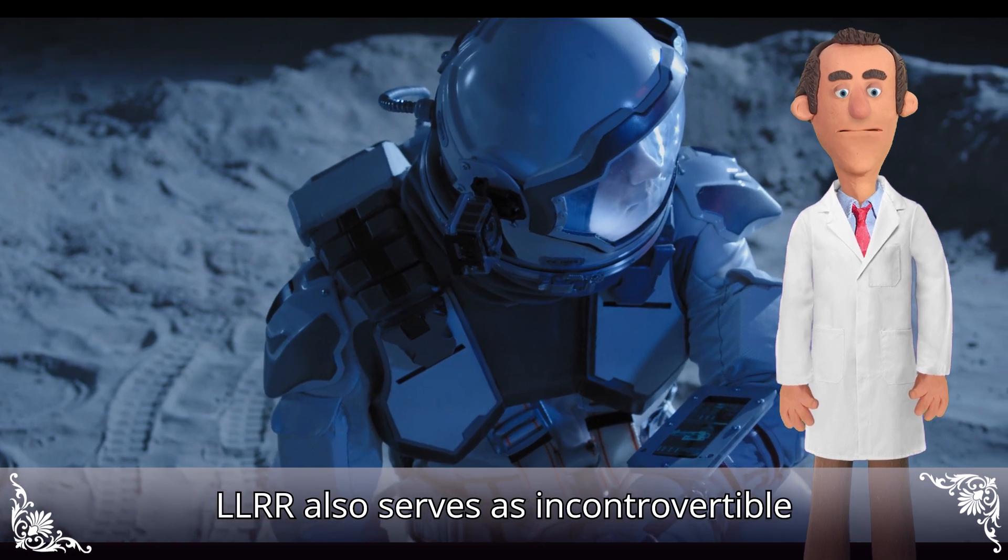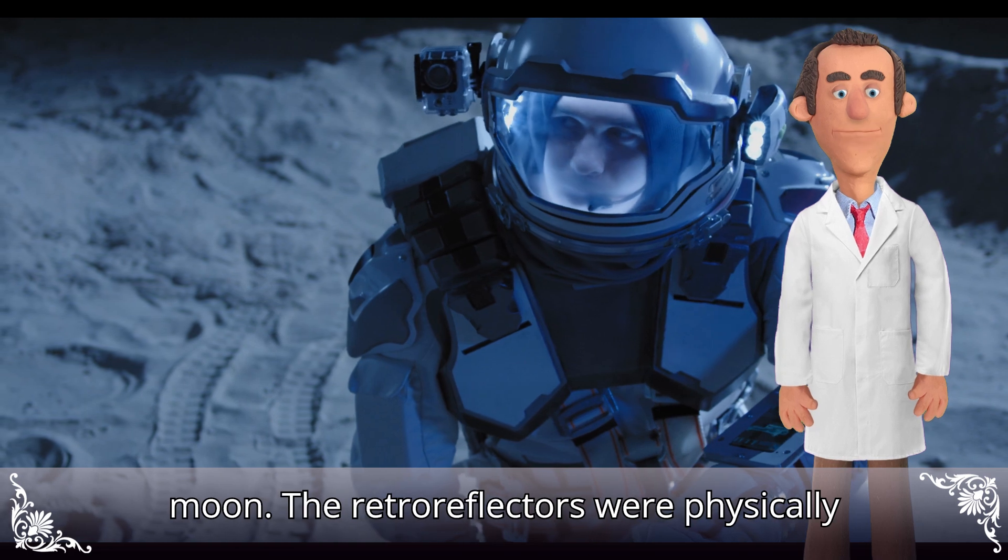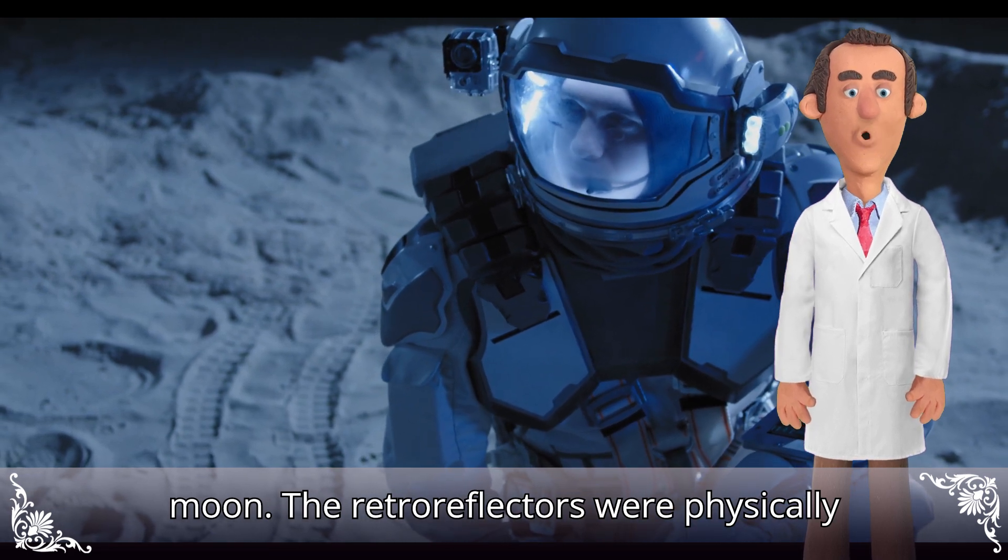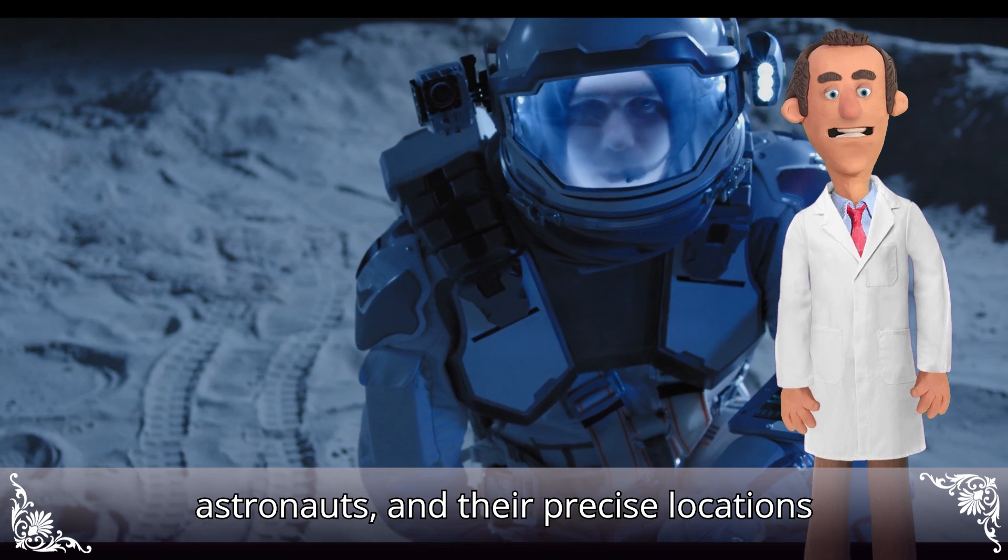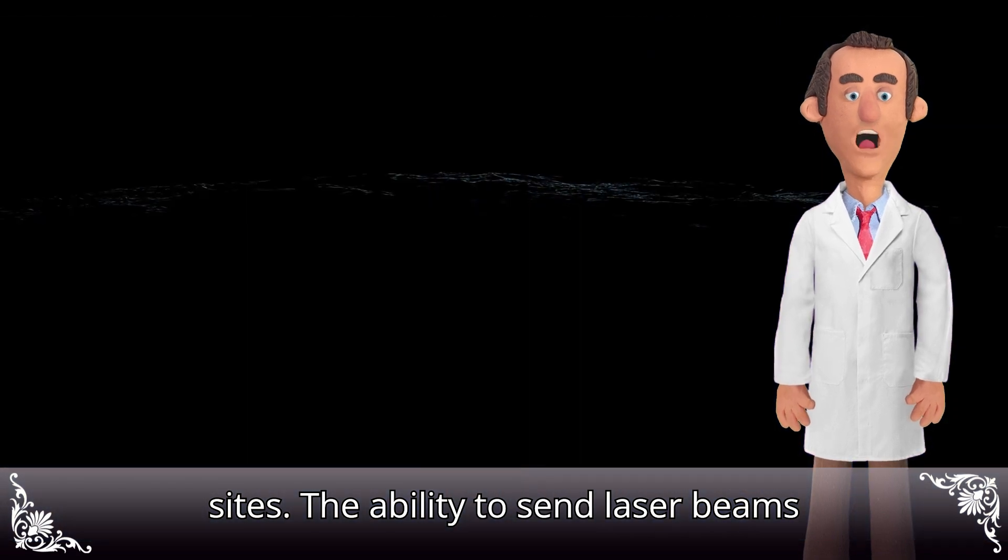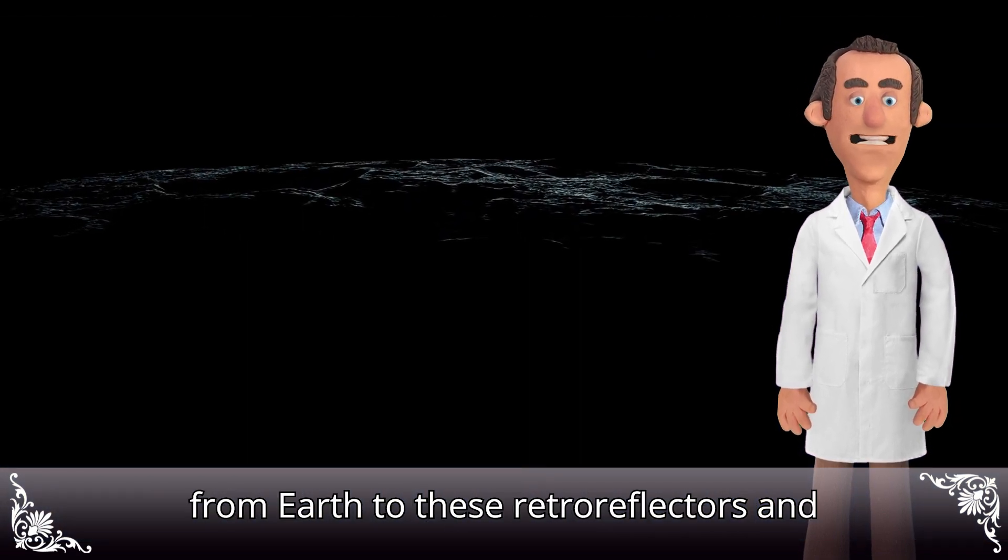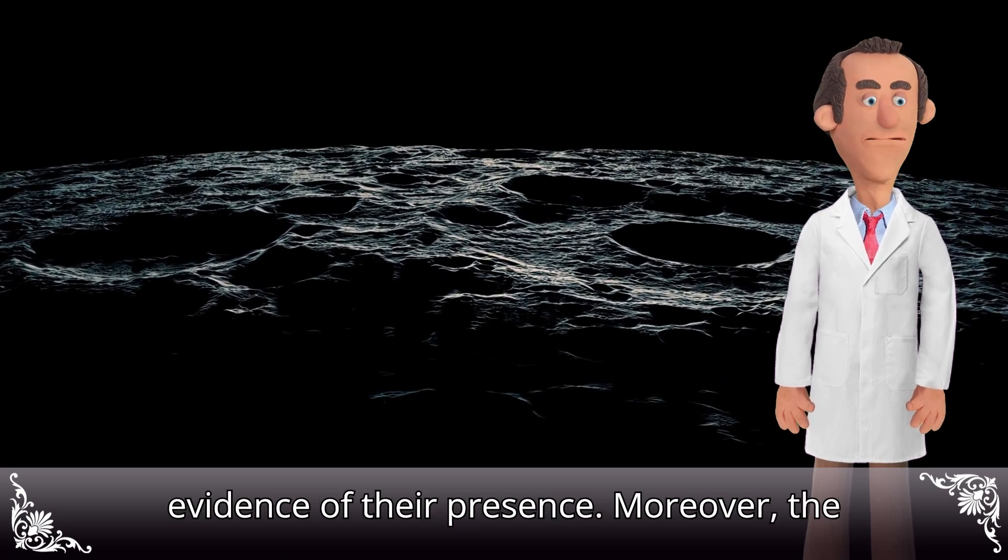The LLRR also serves as incontrovertible proof that humans have landed on the Moon. The retroreflectors were physically placed on the lunar surface by astronauts, and their precise locations correspond with documented Apollo landing sites. The ability to send laser beams from Earth to these retroreflectors and receive reflections back is direct evidence of their presence.